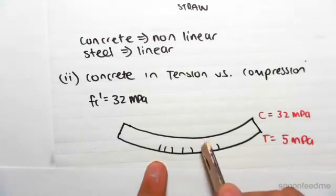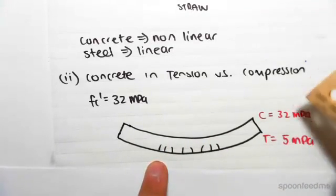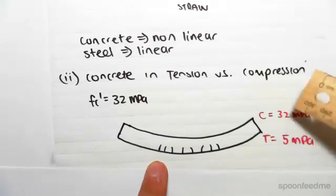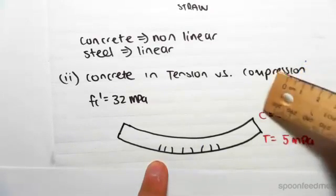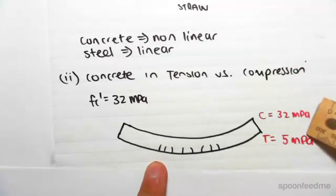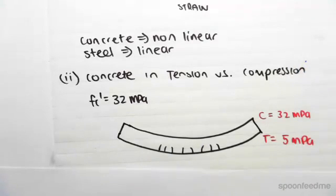So the tensile strength of concrete might only be 5 MPa. You can see that we're getting these tension cracks forming. So once again, the main point I want to take from this is that concrete handles very well in compression but not so well in tension.